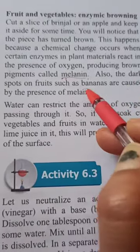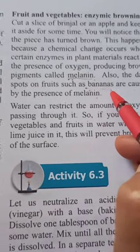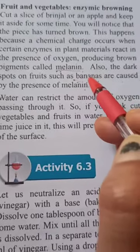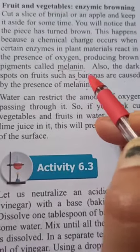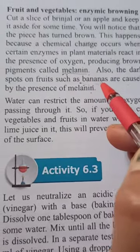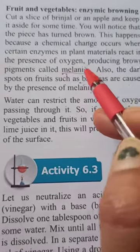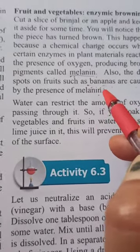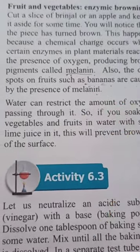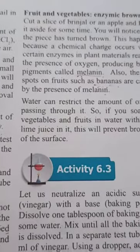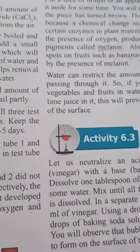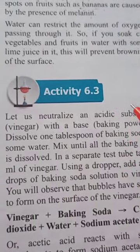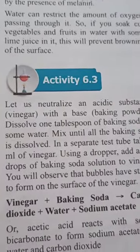For example, if we cut or peel a banana and leave it for some time, it also changes to a brown, spotty color. This is because of the melanin pigment present in it. So enzymatic browning in fruits and vegetables is also an example of chemical change.